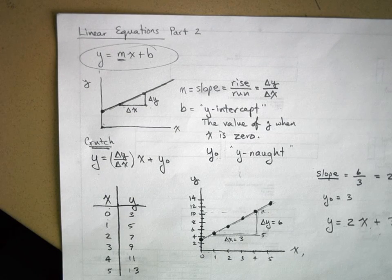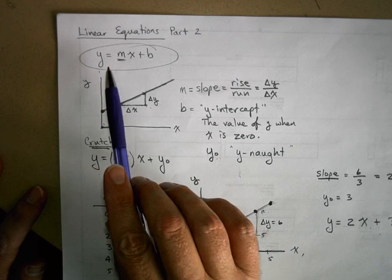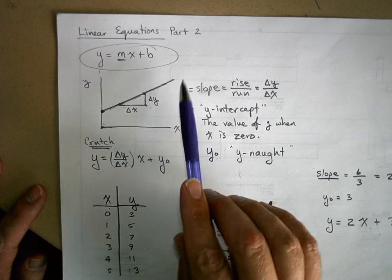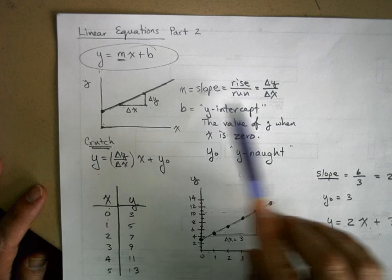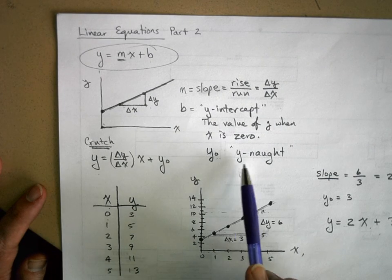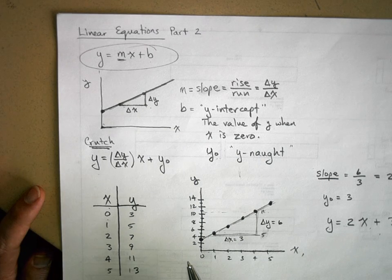Let's continue from what we did last time. We started off kind of reviewing what the linear equation is and that it's a graph, it's a straight line. We talked about what slope and y-intercept was that we're going to call it y naught from now on, or the value of y when x equals zero.